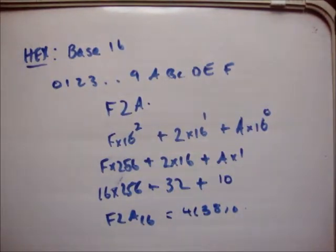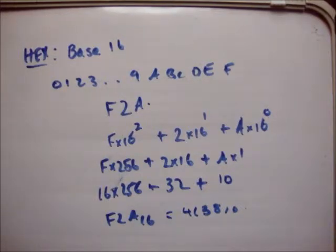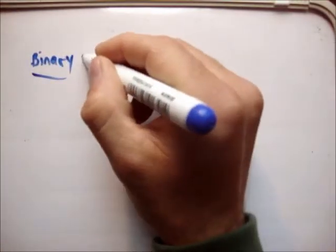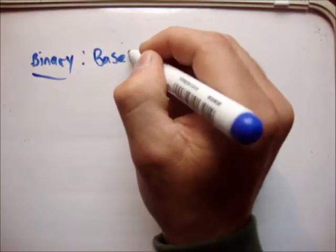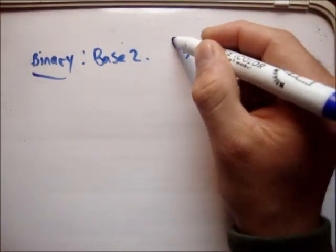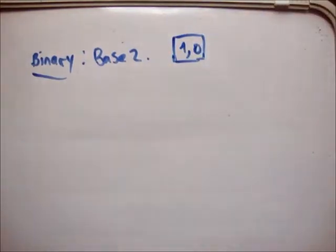An advantage of higher bases is that it takes fewer characters to write the same number — hexadecimal uses 3 characters to write what takes 4 in base 10. You could imagine that a base 100 system would be even more compact. So humans operate in different bases. Now, the real purpose of this video is to talk about binary. Binary means 2, so it's a base 2 system, and the two characters used are 1 and 0. Just like 0 to 9 made up all numbers in base 10, and 0 to 9 plus A to F in base 16, these two characters make up every other number.